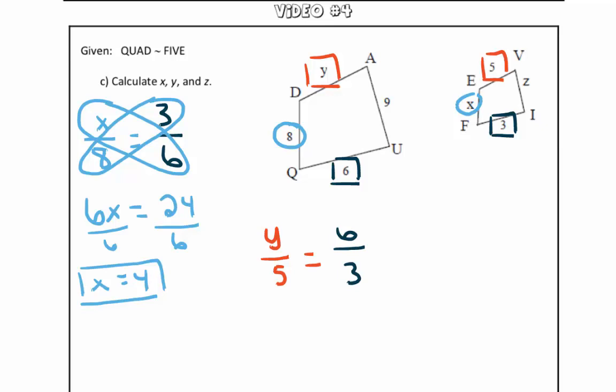Notice how in this proportion, since we started with the larger quadrilateral in the numerator, we want to stick with the larger quadrilateral in the numerator of the other ratio. So in the numerator, again, we have the larger quadrilateral, and in the denominator, we have the corresponding parts of the smaller quadrilateral. So to solve this, we are going to go ahead and cross multiply.